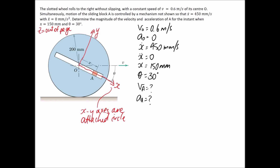Let's start looking for the velocity at point A. We have an equation that relates velocities when we have a rotating coordinate system. We want to include the velocity of A, and we relate it back to point O, since we already have its velocity given to us. We'll go through and figure out what each term actually is.